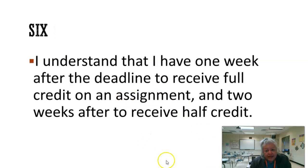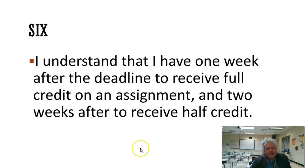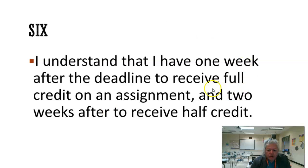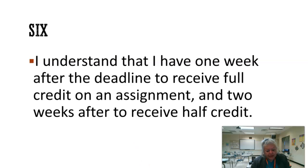Now, this is the deadline thing. I understand I have one week after the deadline to receive full credit on the assignment. If you have an assignment worth 50 points but you get 40 correct, then within the deadline week and the week after, you get 40 points. However, you get two additional weeks and you will get half of that credit. So on a 50-point assignment, you would have made 40 but you missed the deadline — you get 20 points.